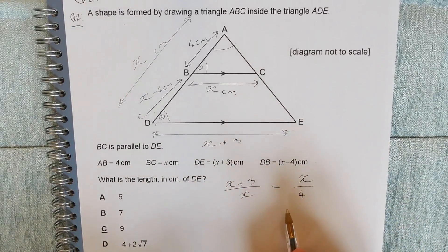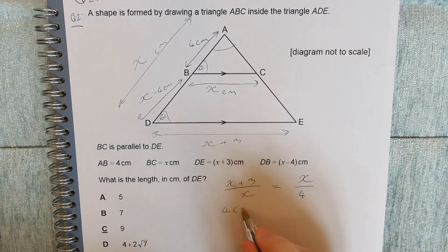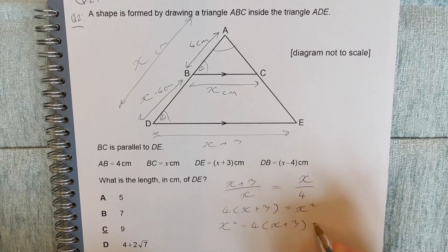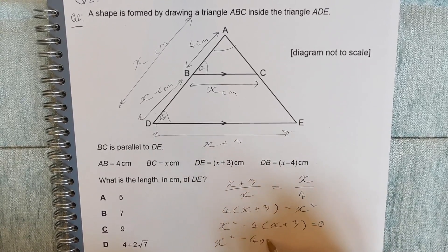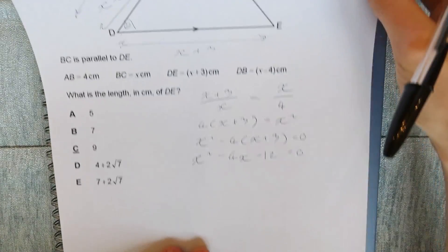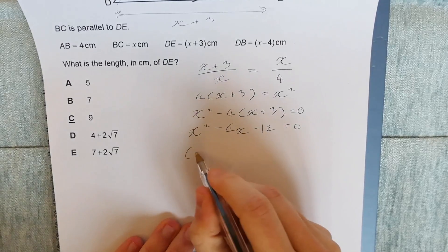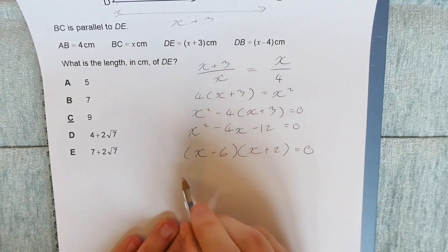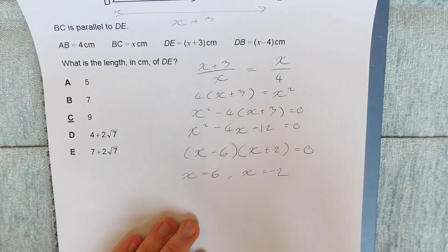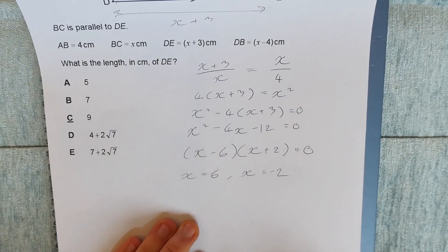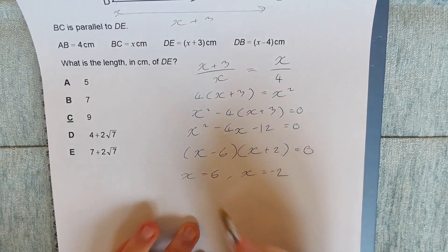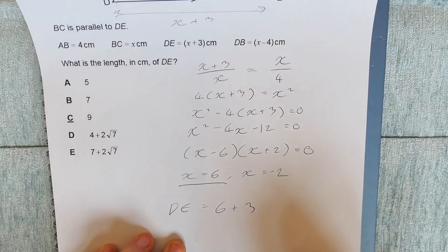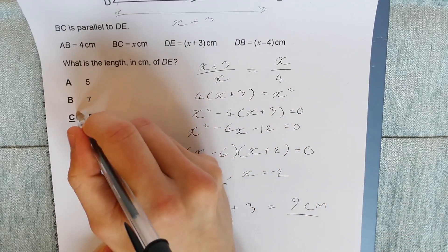Now we need to rearrange this a bit because we can't solve for x in this form. So 4 times x plus 3 is equal to x squared. Do a bit of rearranging here. x squared minus 4x minus 12 is equal to 0. Now, from this point, we can refactorize this. So this will actually factorize to x minus 6, x plus 2 is equal to 0. So now this gives us two solutions for x: x equals 6 or x equals minus 2. Now, as this is a real life triangle, we can't have a negative value for x because BC can't be minus 2 centimeters long. Therefore, x is equal to 6. DE, therefore, is equal to 6 plus 3, as it's x plus 3, is equal to 9 centimeters, meaning that the answer is C.